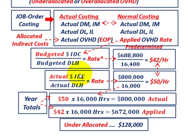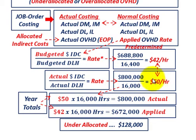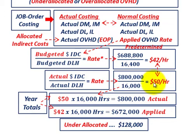Now at the end of the year, we determined that our actual indirect costs totaled $800,000 and our actual direct labor hours were 16,000. That gives us an actual overhead rate of $50 per hour. So we've got a difference between what we budgeted at $42 per hour and what we applied for our costing for the year versus our actual overhead at $50 per hour.